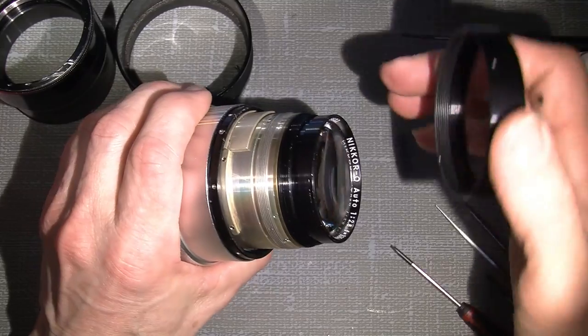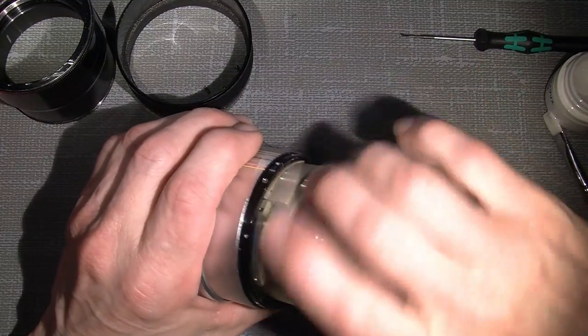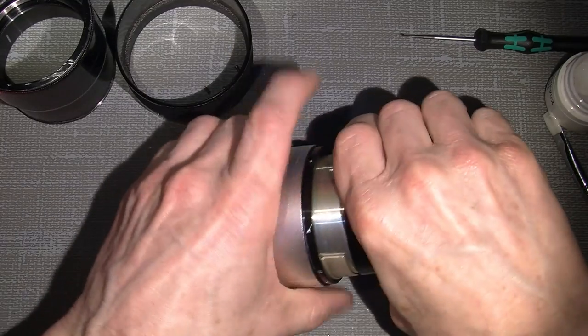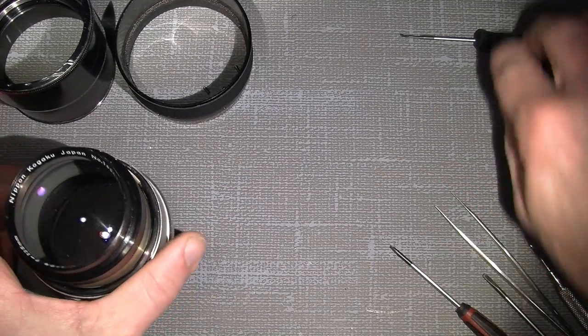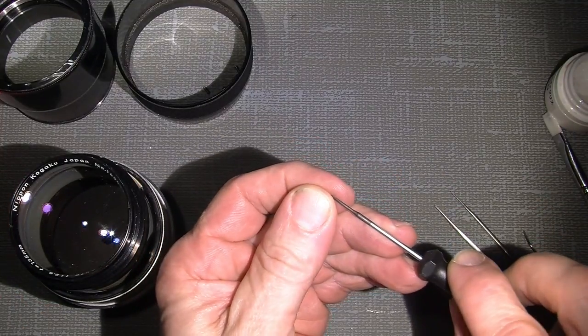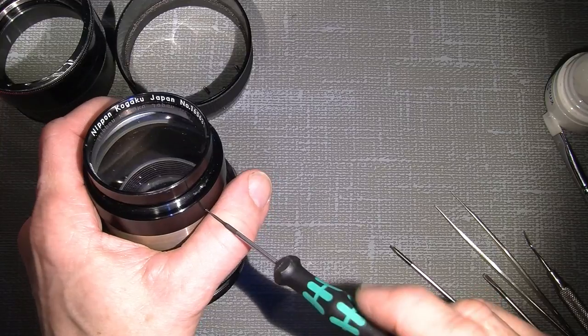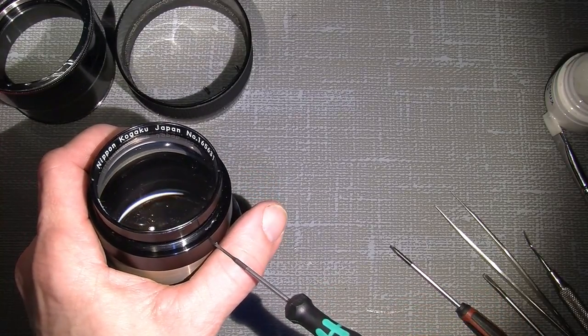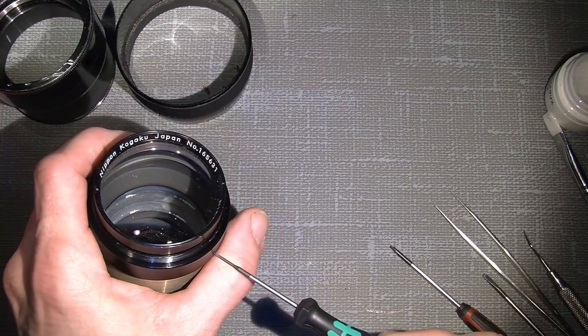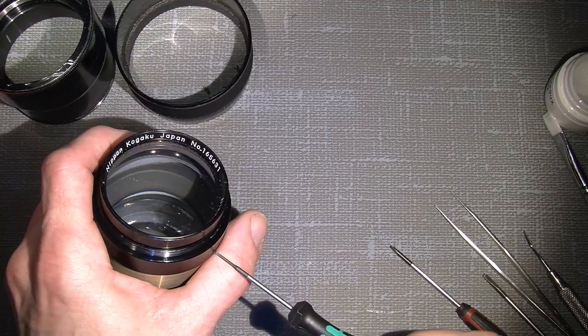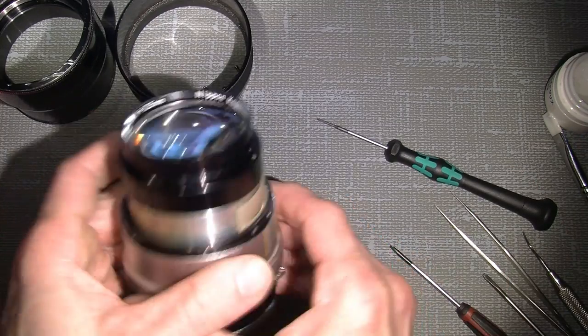The lock ring that holds the lens assembly in place goes in. It has to sit tight. And the small set screw on the side of the lock ring here.